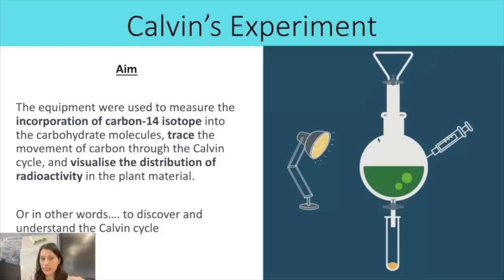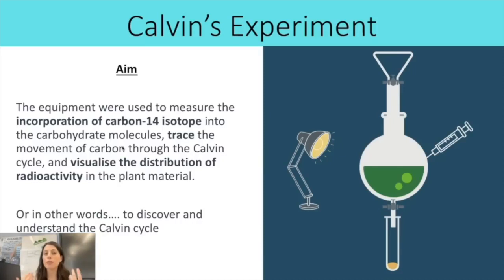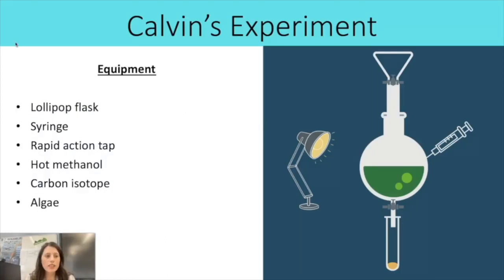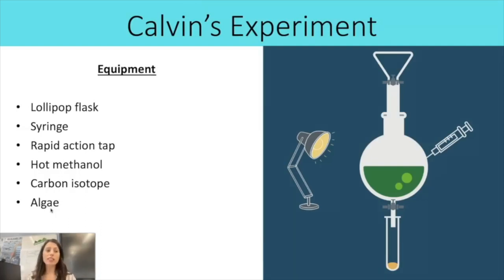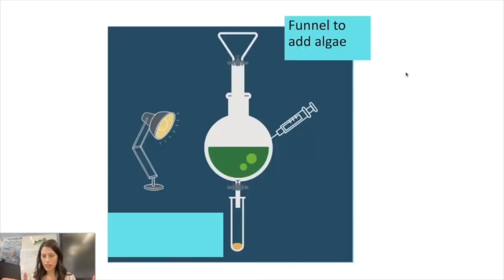Calvin's apparatus uses a carbon-14 isotope — a radioactive form of carbon — so it can be traced through different carbon-containing molecules as it's absorbed and passed on. This allowed visualization of the distribution of radioactivity in plant material and helped discover the Calvin cycle. Key pieces of equipment include the lollipop flask, syringe, rapid-action tap, hot methanol or ethanol, the carbon isotope, and algae.